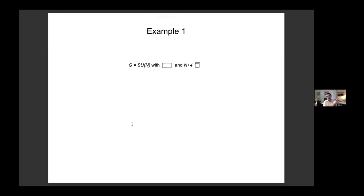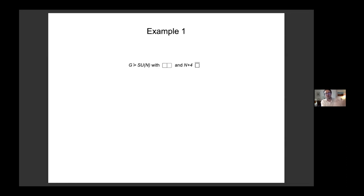Here is the first example. Take G to be SU(N) and consider a bunch of Weyl fermions — everything here is a right-handed fermion. One fermion transforms in the symmetric representation of SU(N) and then N+4 fermions transform in the anti-fundamental of SU(N). This is a famous collection of Weyl fermions whose anomaly vanishes. If you've seen this collection before, it's almost certainly in the context where G is a gauge group — an SU(N) chiral gauge theory. Whether you think of G as a global or gauge symmetry, the story is exactly the same.